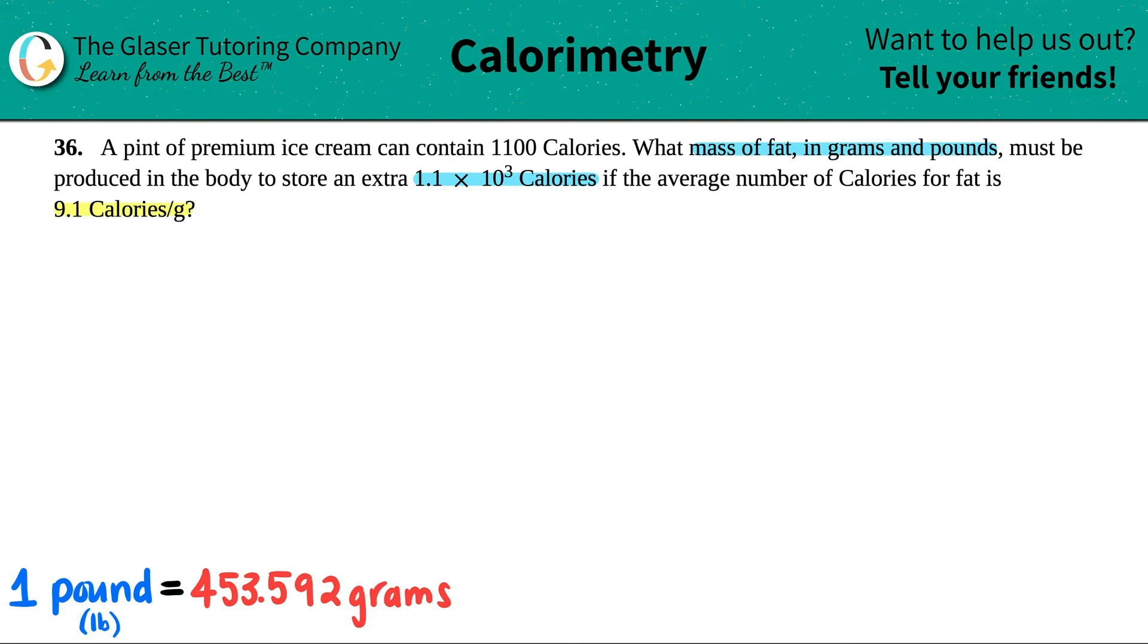We've done a couple of problems like this already. We're talking about fat storage in terms of energy. The average number of calories for fat is 9.1 calories per gram. That means that for every one gram of fat that is eaten and metabolized, the body will be able to produce 9.1 calories for energy purposes.